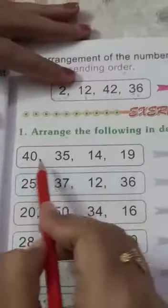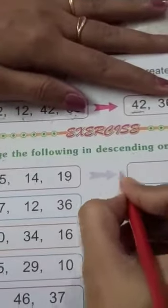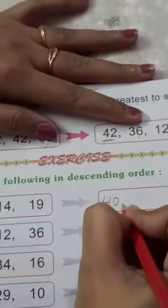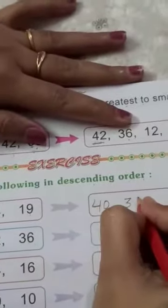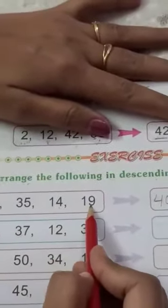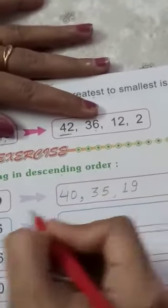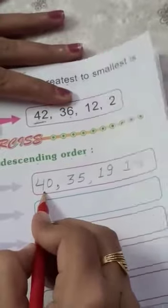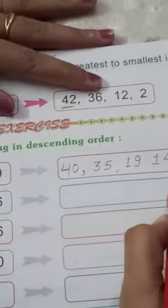Now this number, this group, which is the greatest number in this group? 40, 35, 14, 19. First of all, write down. Which is the greatest number in this group? 40. Write down 40, then 35, then 14, 19. Which is greater, 14 and 19? 19. And last 14. In this group, 40 is greatest number and 14 is smallest number. So these numbers arrange in descending order.